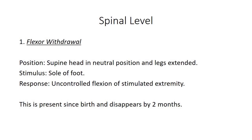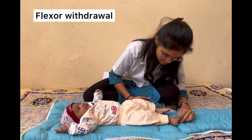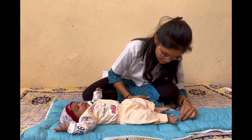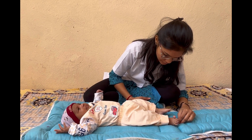At the spinal level, we have our first reflex: flexor withdrawal. Position: supine, head in neutral position and legs extended. Stimulus: sole of foot. Response: uncontrolled flexion of the stimulated extremity. This is present since birth and disappears by two months. As you can see in the video, the stimulus is given on the sole of the right foot and flexor withdrawal can be seen.